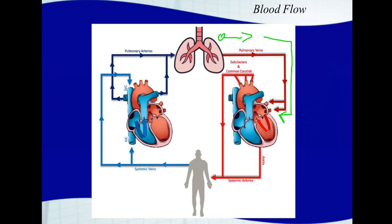The left atrium receives that oxygenated blood and sends it down to the left ventricle through the mitral valve — remember, the mitral valve is on the left. Then it goes into the aorta through the aortic valve. The aorta is that big, giant artery that breaks down into other large arteries and eventually into arterioles. All of these arteries take oxygenated blood out to the body to provide oxygen to cells and create aerobic metabolism.